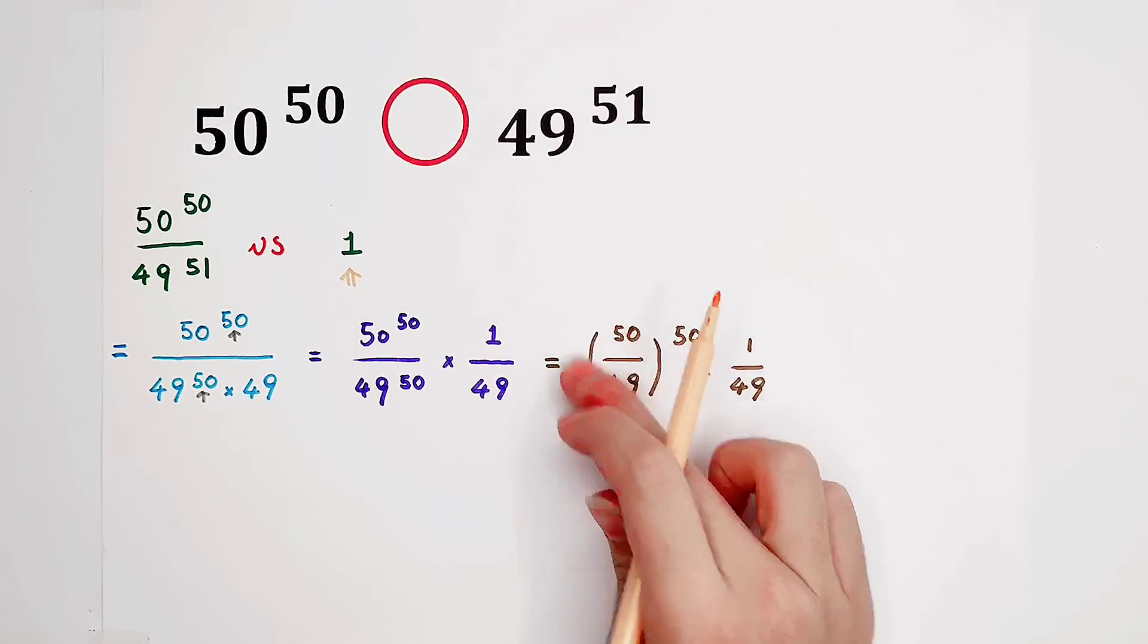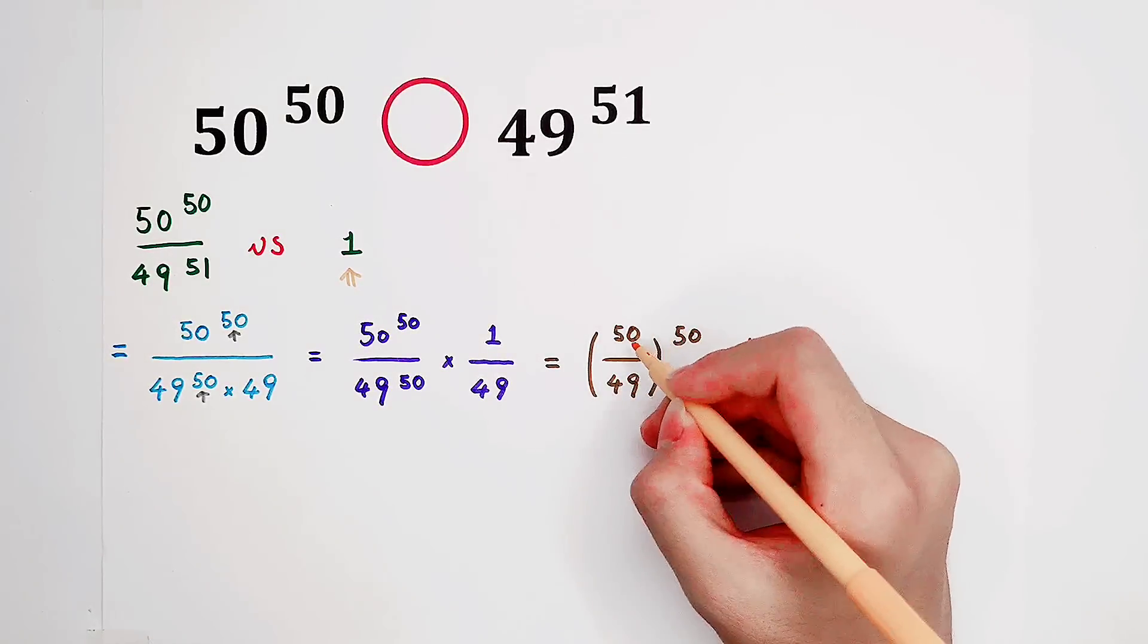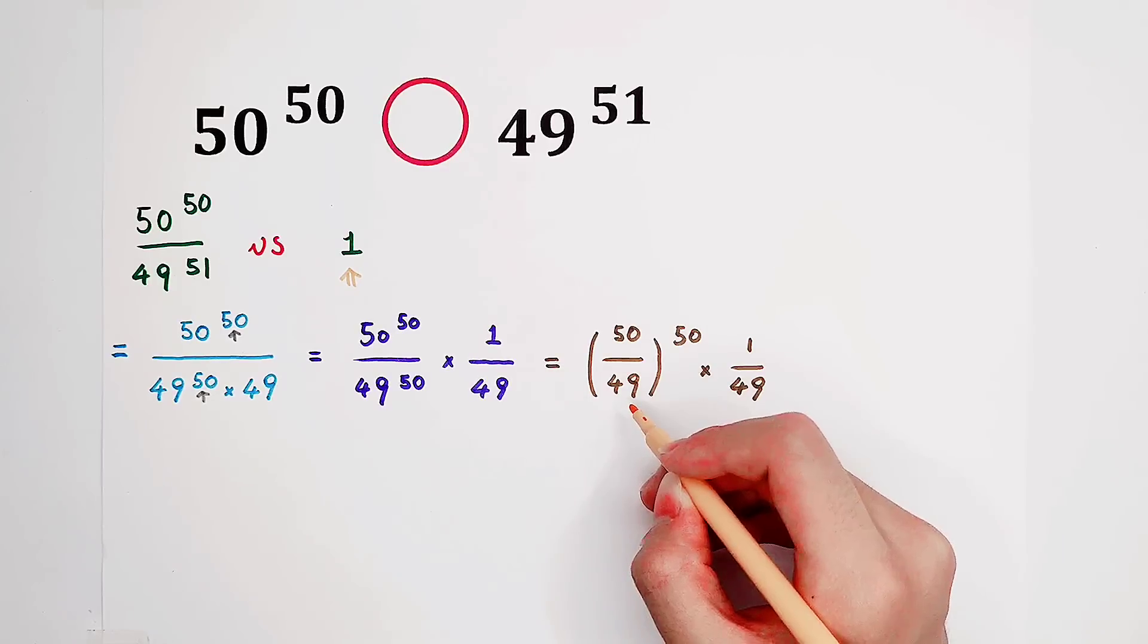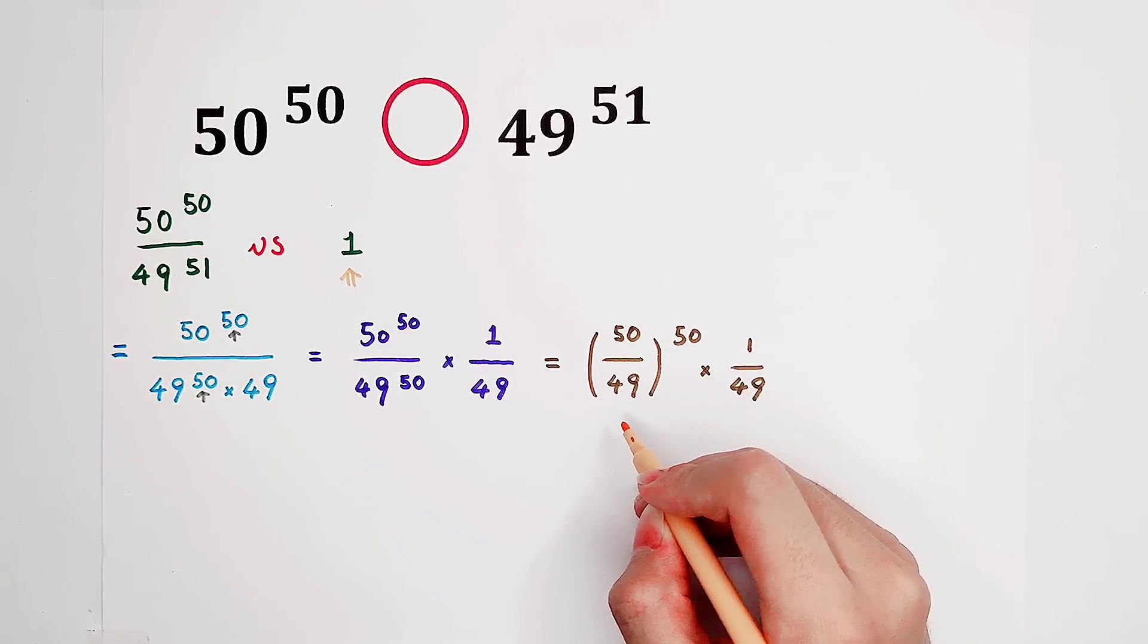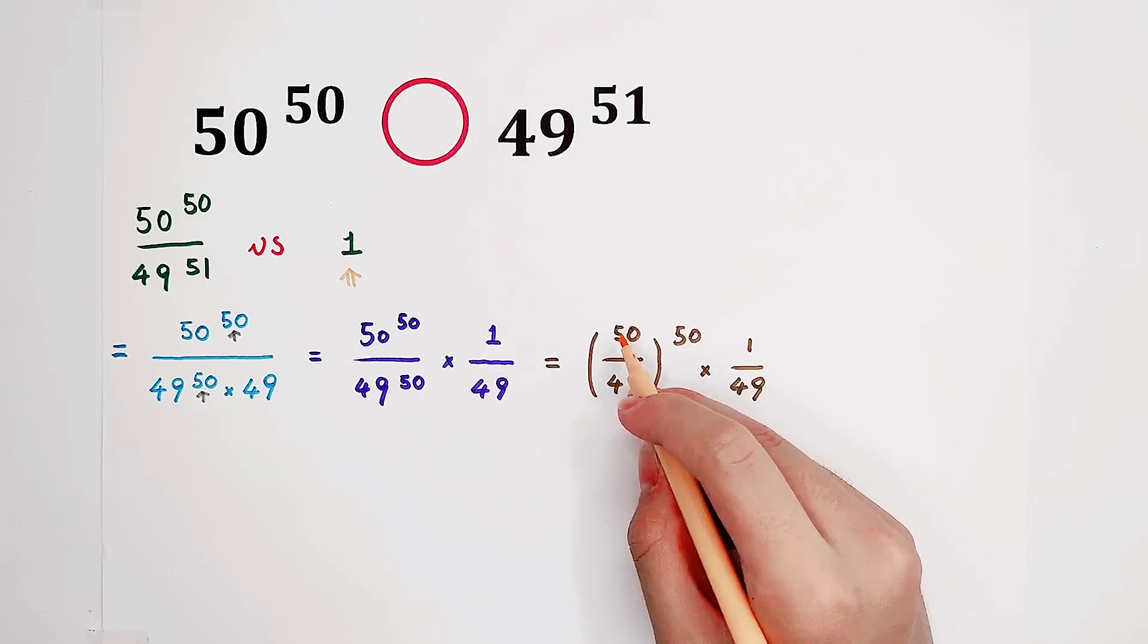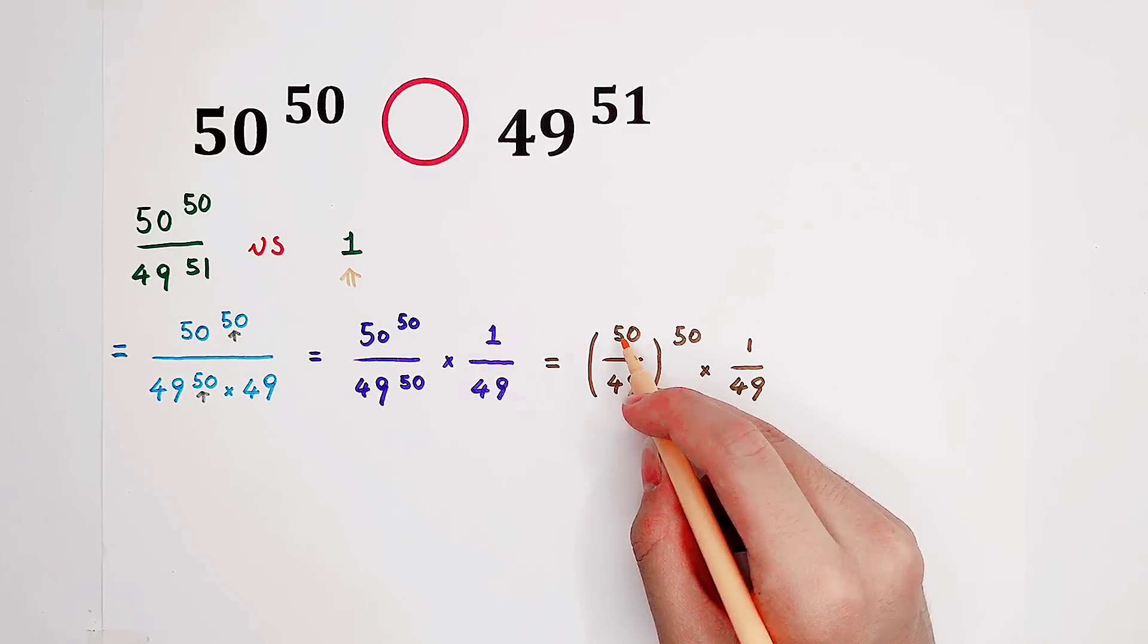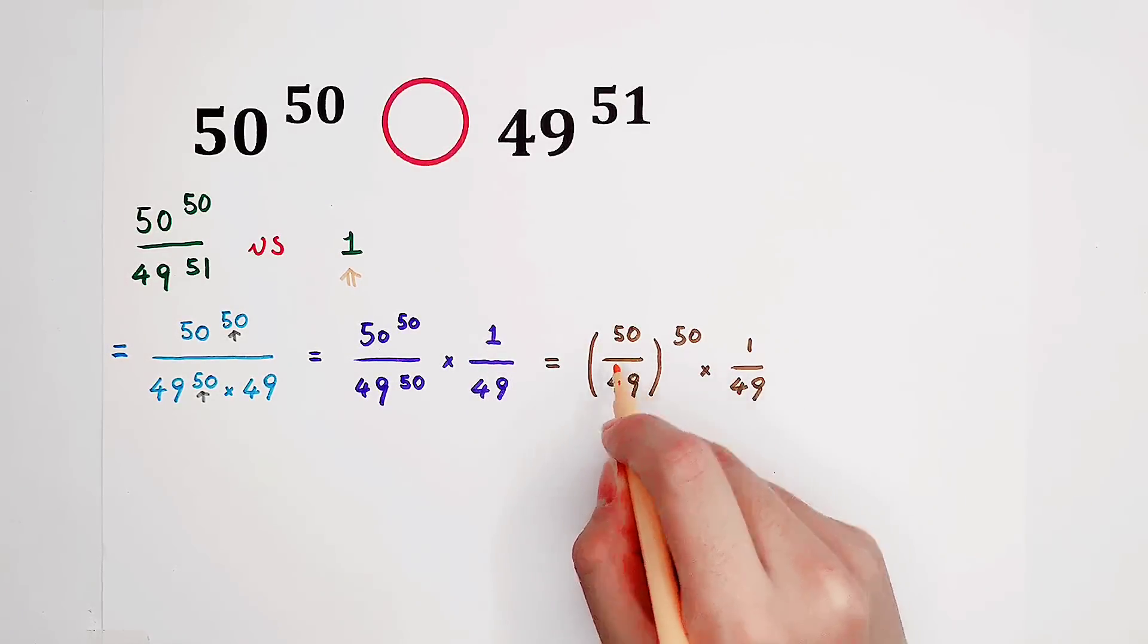This fraction inside the bracket is 50 over 49. 50 and 49 have a special relationship. That is, 50 is 1 more than 49. So it can be recognized as 1 plus 49.